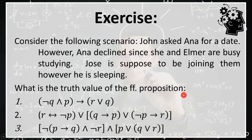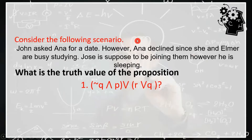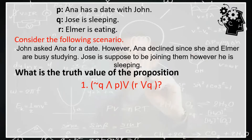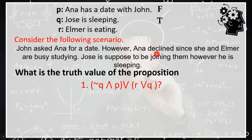Let's find the truth value of the given proposition below, considering this scenario: John asked Anna for a date; however, Anna declines since she and Elmer are busy studying. Jose is supposed to be joining them, but he is sleeping. For proposition P — 'Anna has a date with John' — that is false because Anna declined. For Q — 'Jose is sleeping' — that is true. For R — 'Elmer is eating' — that is false since Elmer is busy studying.